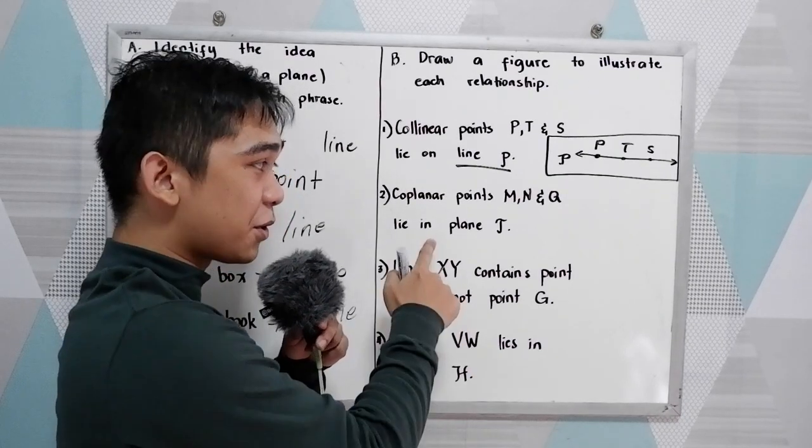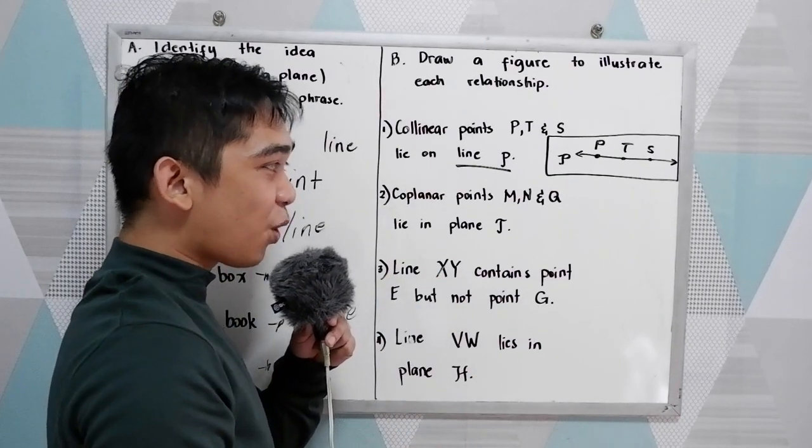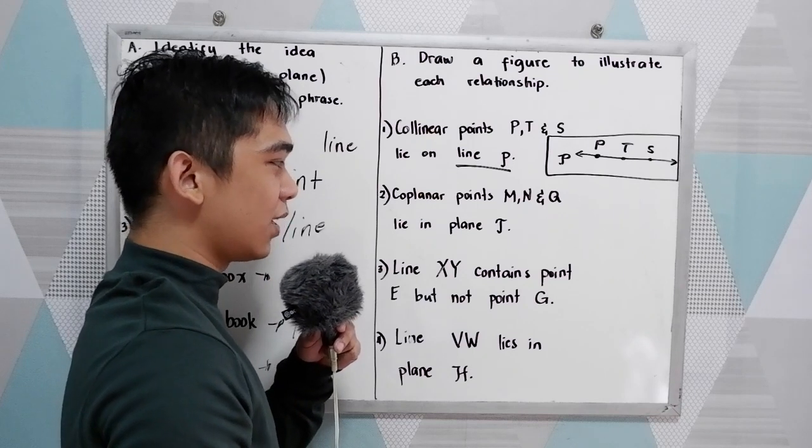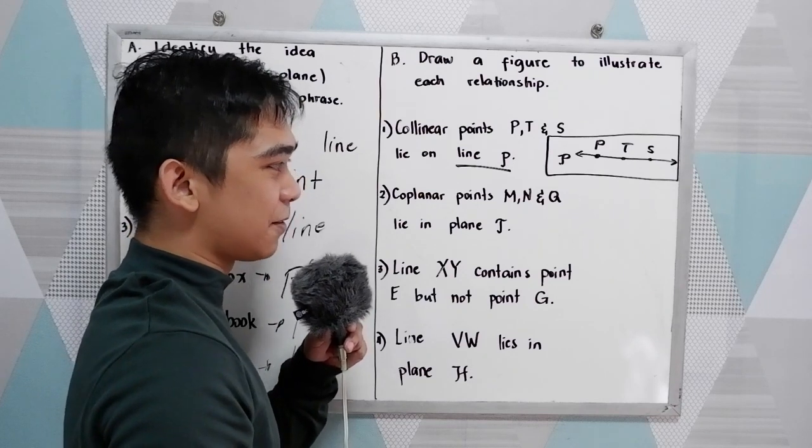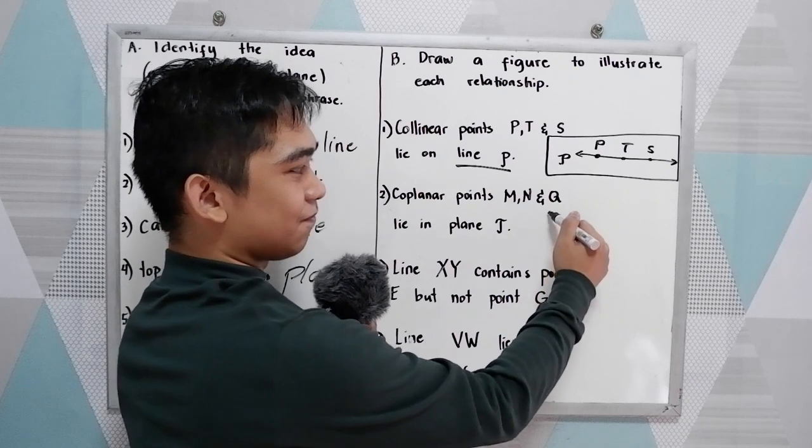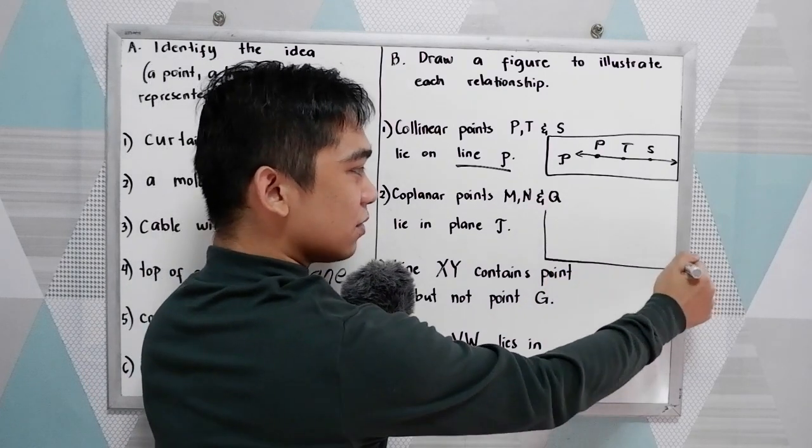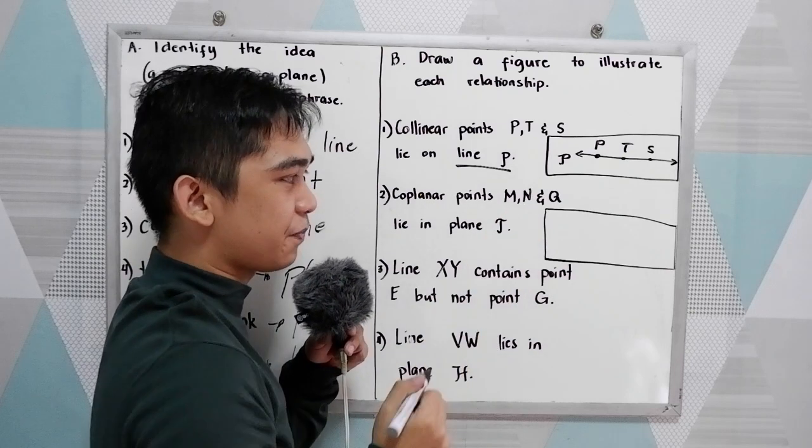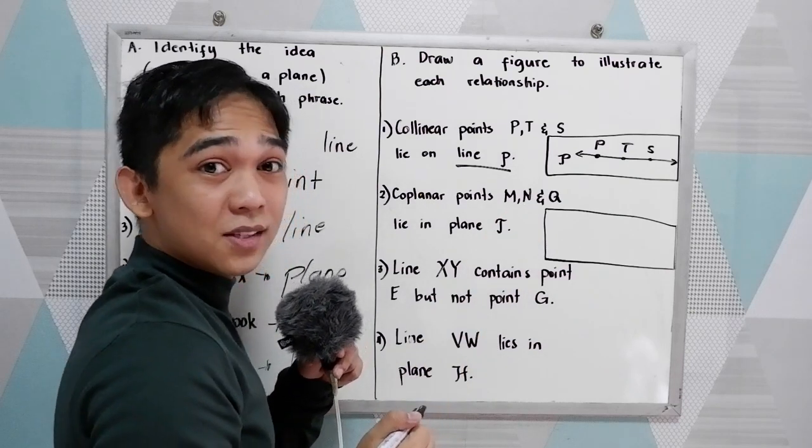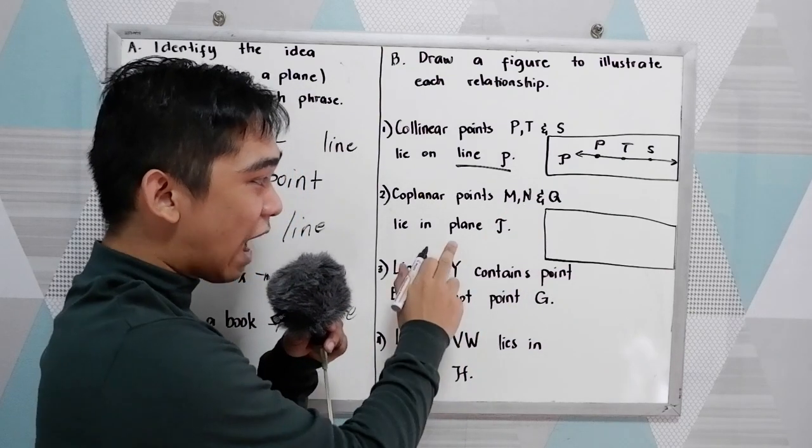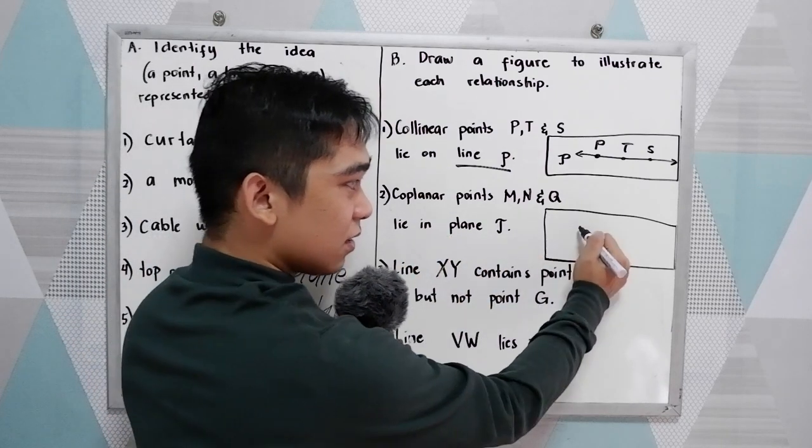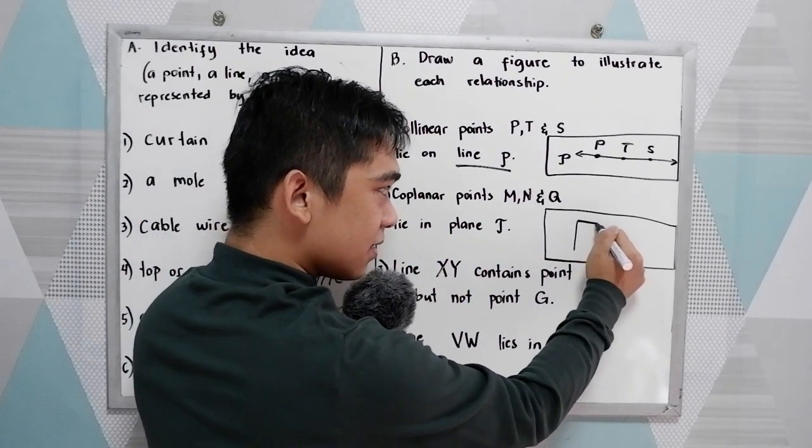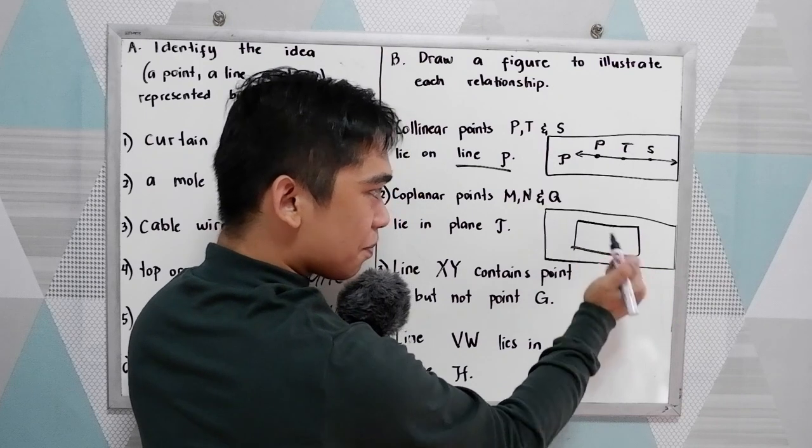Now, can you try number two? Coplanar points M, N, and Q lie in plane T. Can you draw the figure, then label the points? Now, let's check your answers. We have plane T. So we have plane T. Let's say this is our plane.